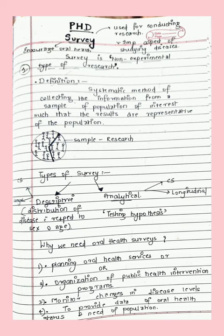Survey is useful for improving health and developing various health services and policies. The definition: it is a systematic method of collecting information from a sample of a population of interest. There are two types of survey — descriptive and analytical. Descriptive describes the disease; analytical involves analysis of the disease and testing of hypothesis.